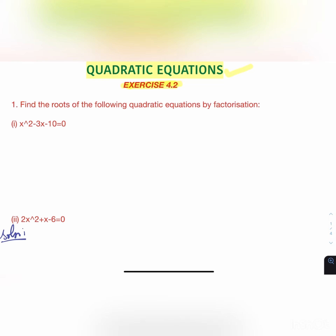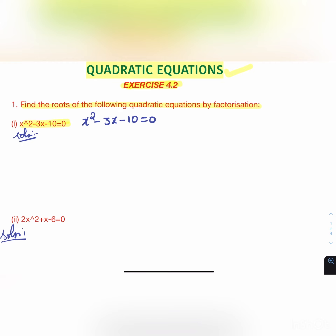We have the first question here: find the roots of the following quadratic equations by factorization. The first question is x² - 3x - 10 = 0. Roots means the value of x such that if you substitute that value into the equation, you get 0. We have already done this in polynomials, so the same thing we have to do here.